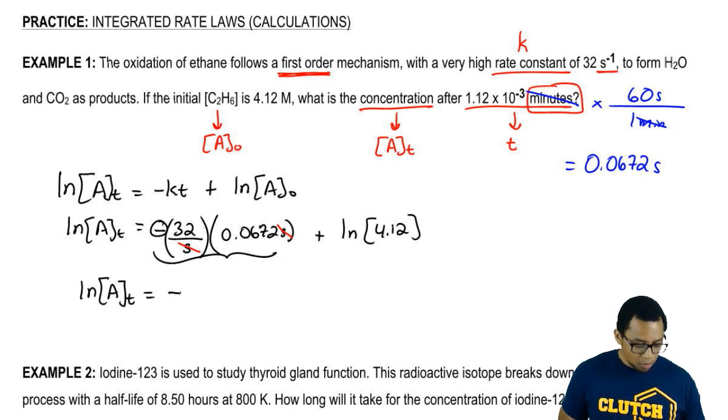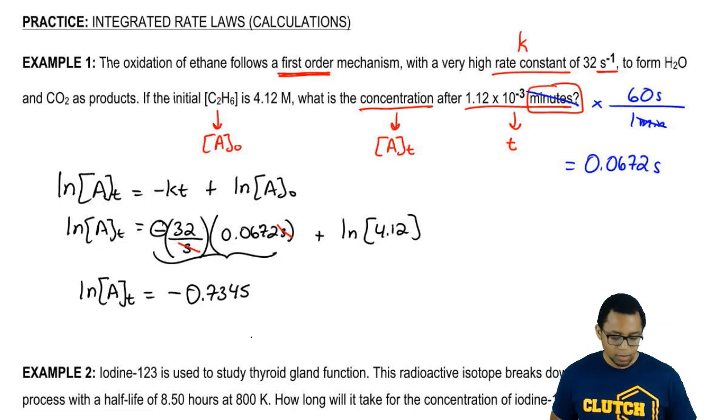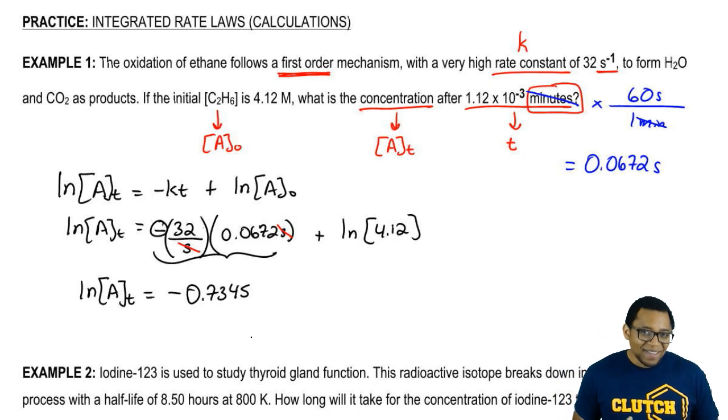So here LNAT equals negative 0.7345. So that is what LN of AT is.